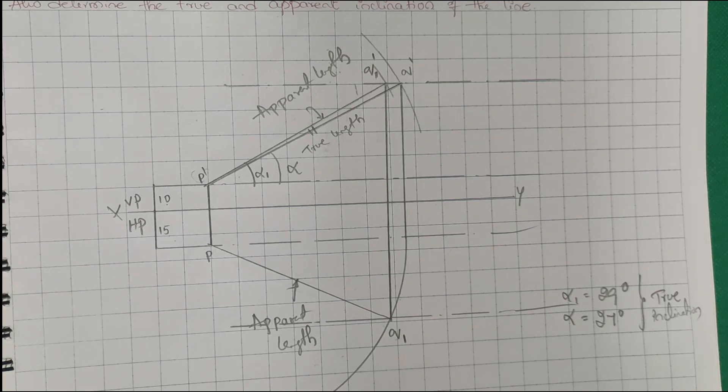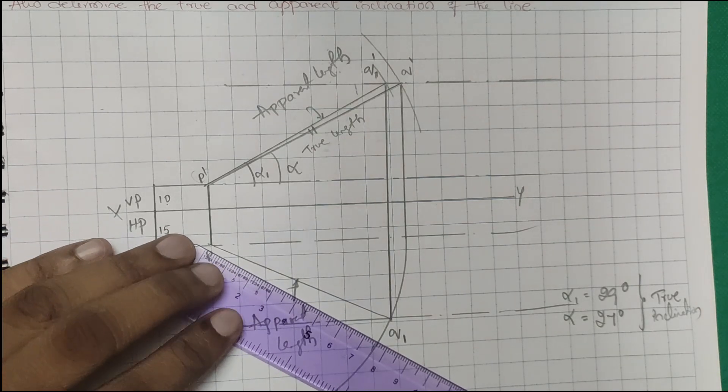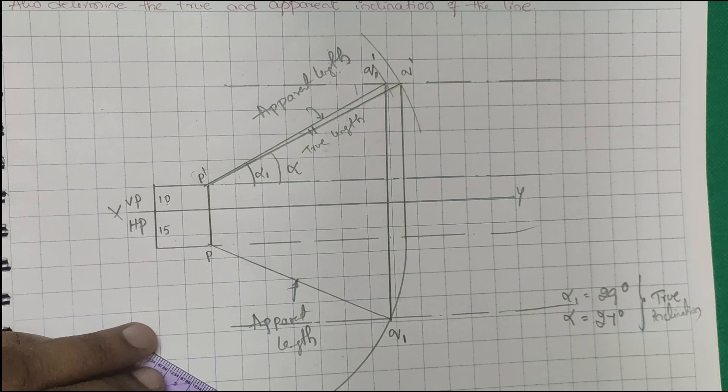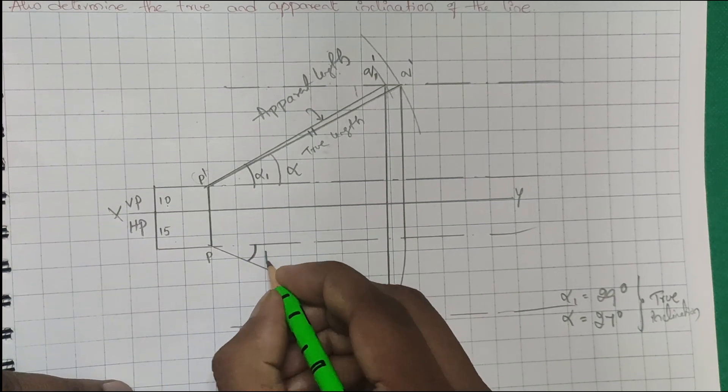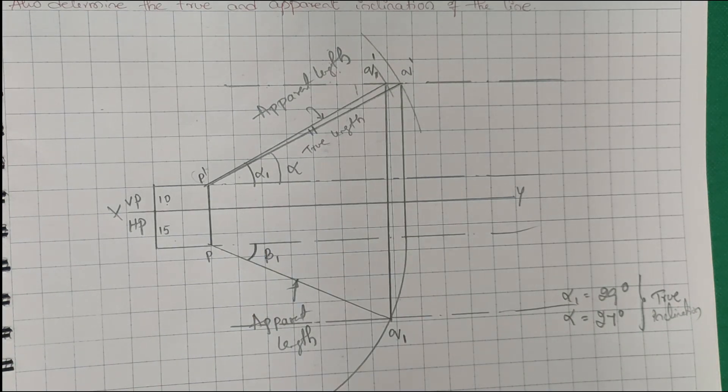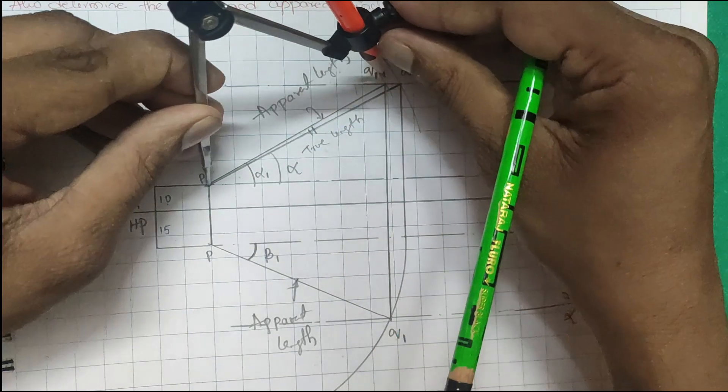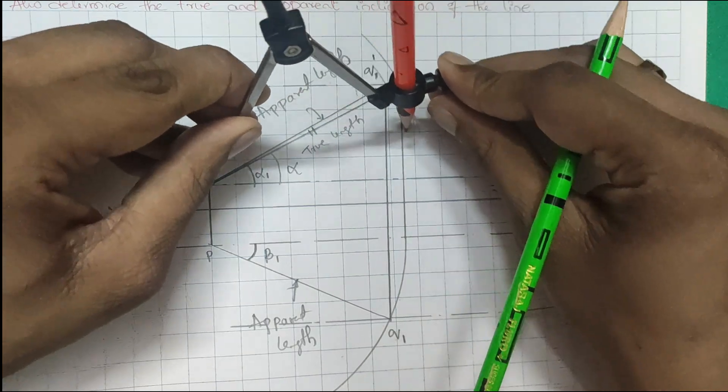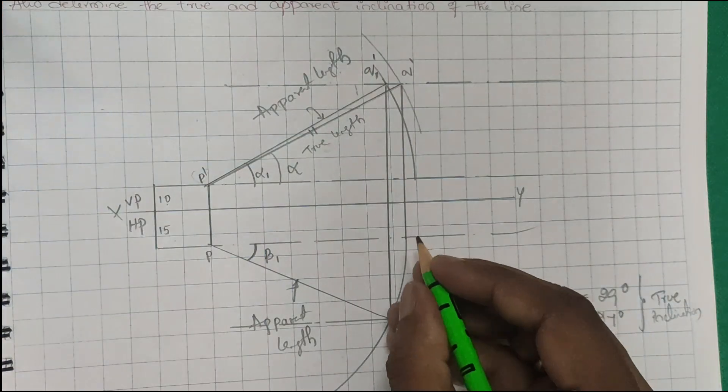For the true length and true inclination, this is your beta 1. You take an 80mm length and draw an arc. Take 80mm length and draw an arc. This is moving upward and this is coming downward. You have to draw this up to this line.